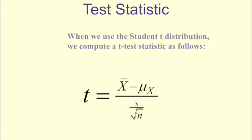Our test statistic is going to use the student t-distribution. So we compute the t-test statistic as follows. It's the same as the z-score, but we take that t-score to a t-table. And instead of having our standard deviation be for the population, it's for our sample.